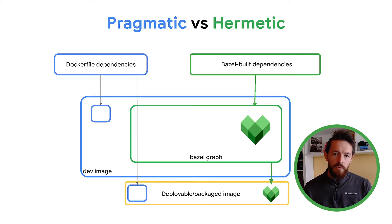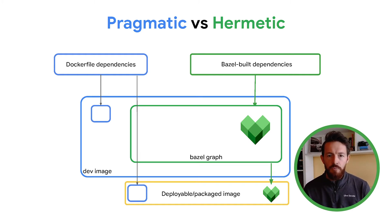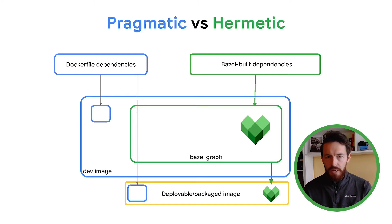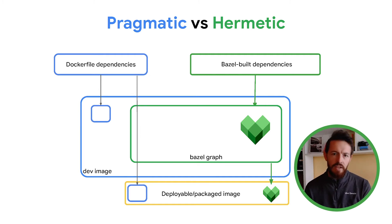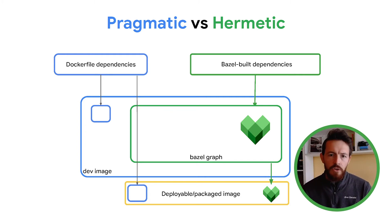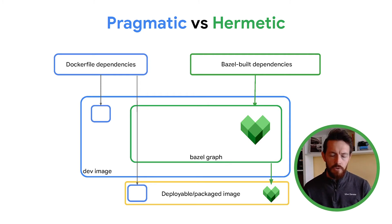The key element to tackle this problem was to find the right dose of pragmatism and hermeticity. We achieve that using Docker for the pragmatic side — anytime we need to react quickly, we use Docker to track dependencies. When we're shooting for more reproducibility and mitigating technical debt, we pick hermeticity and track everything using Bazel. By using both Docker and Bazel in a smart way, we can address the constraints I just mentioned.